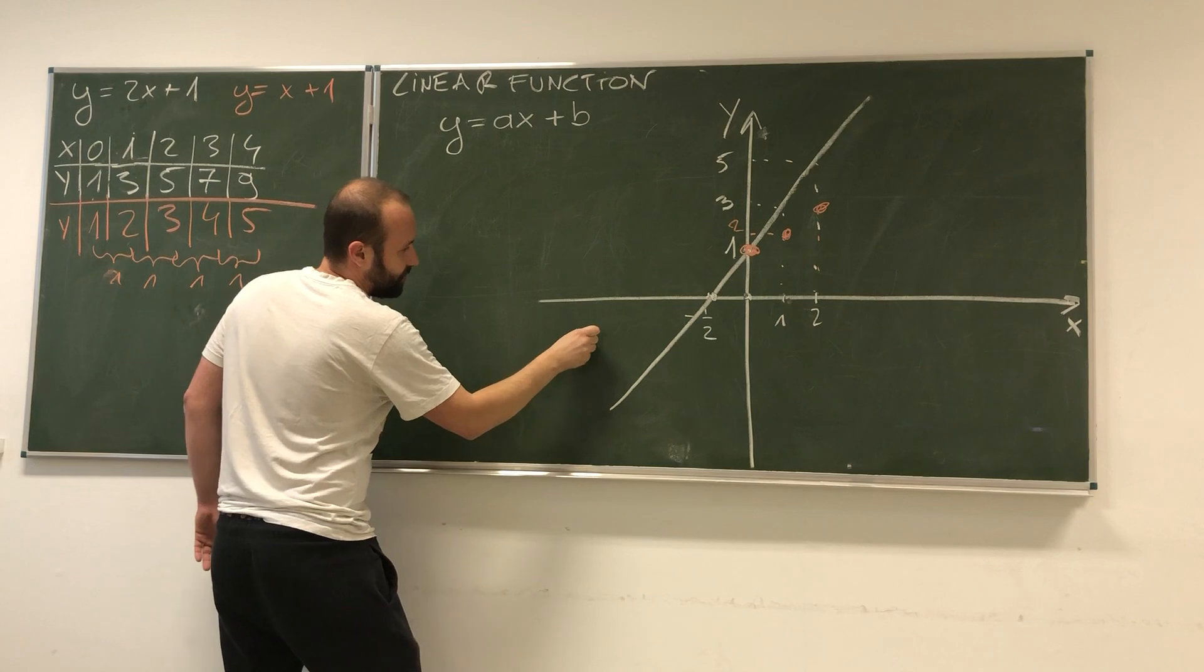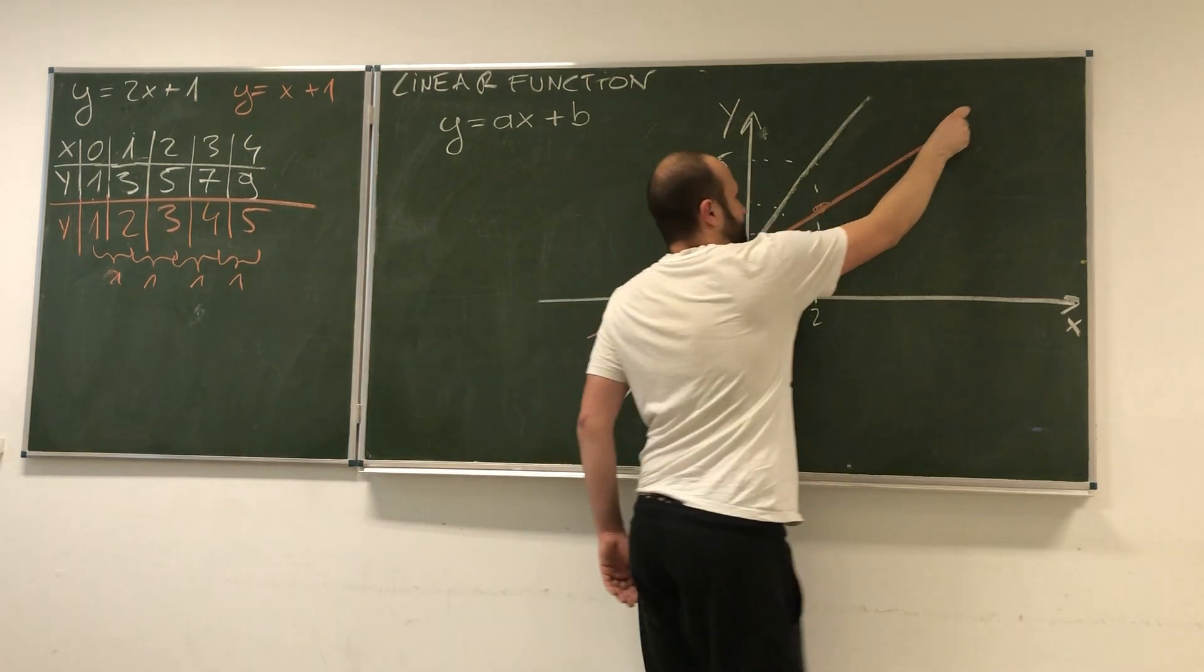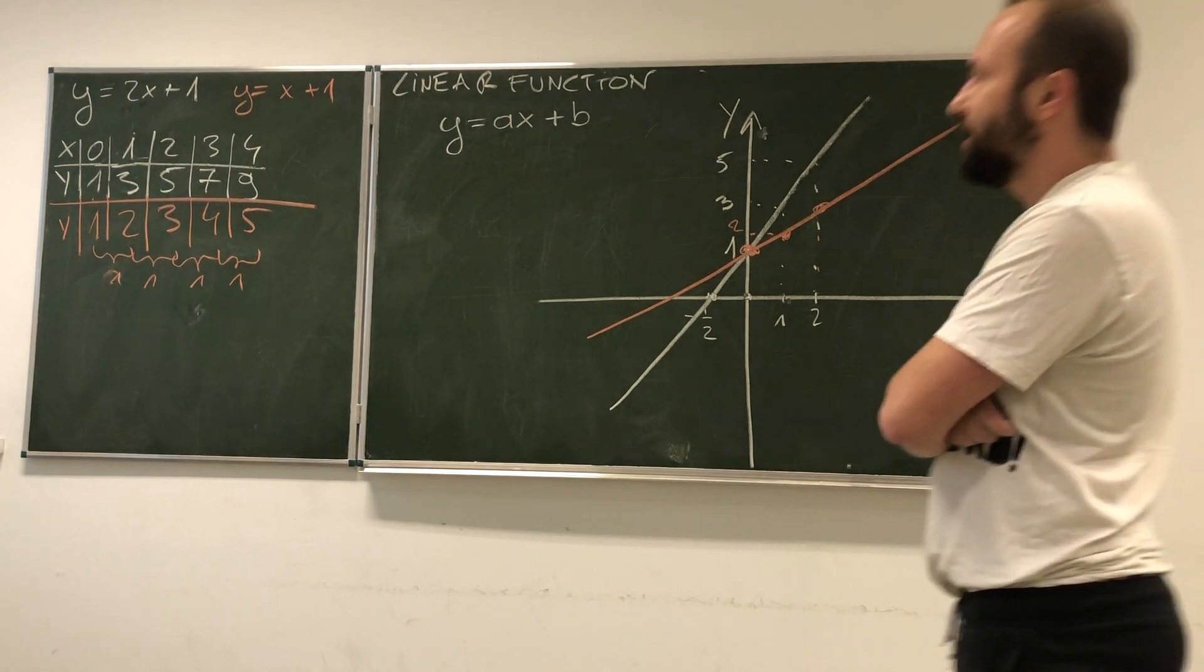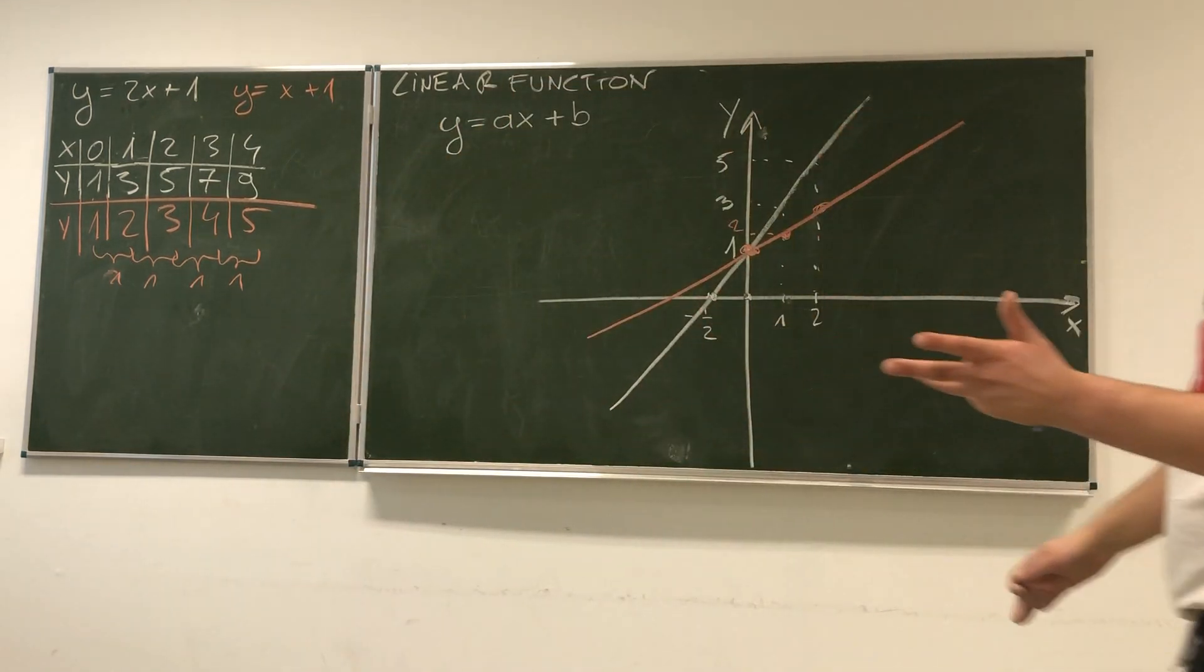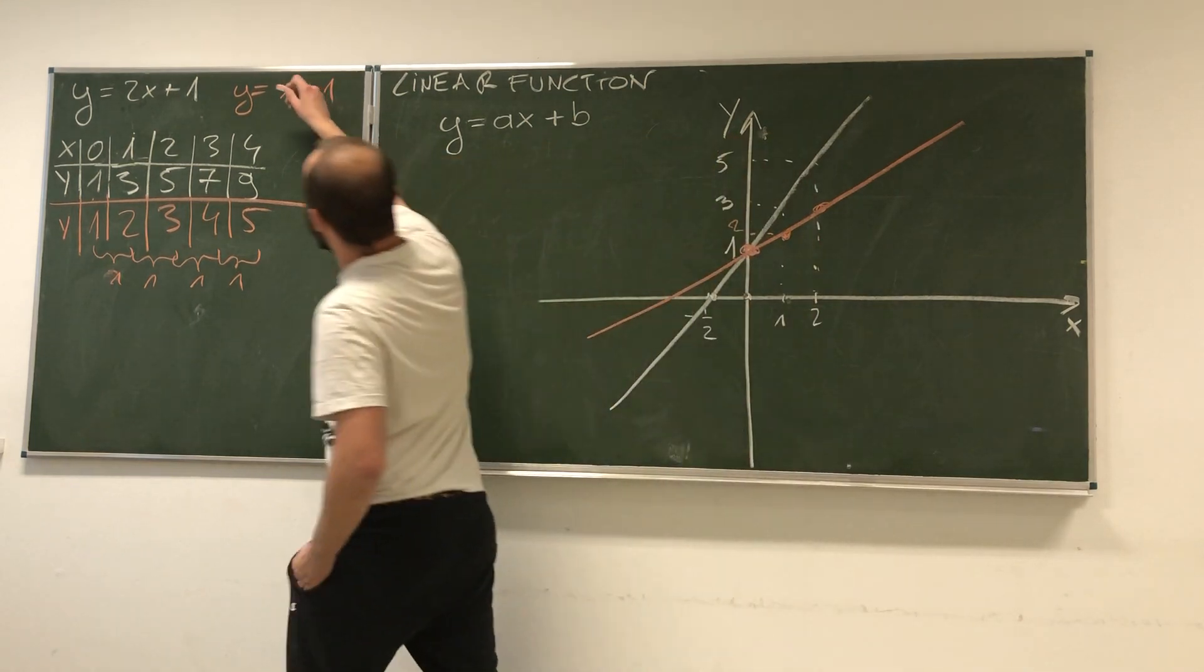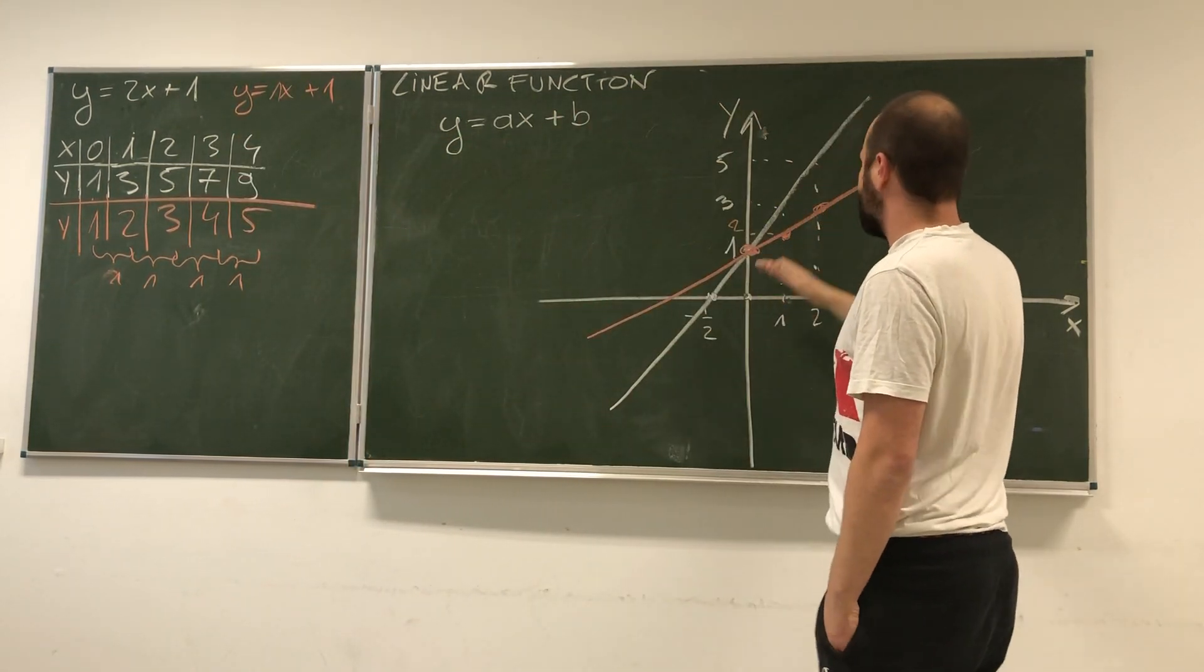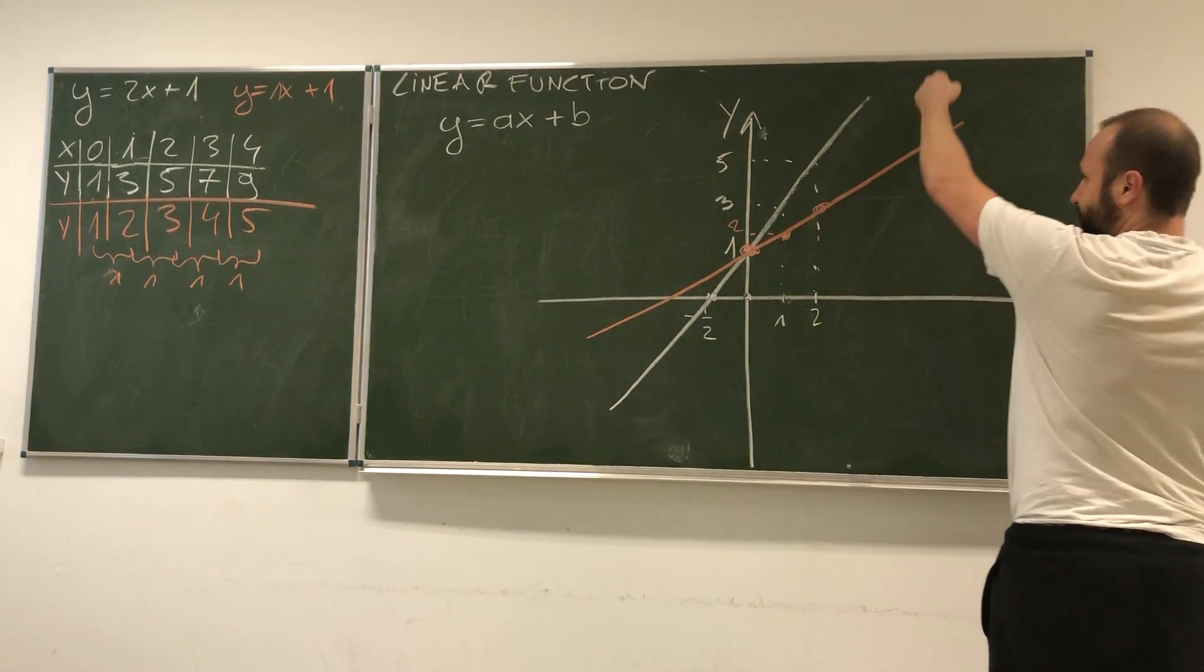If I draw this function, it's going to look like this. Why is this function looking different? We see that b, the constant, is the same in both cases. But here the coefficient is 1. This function is also rising—as x gets bigger, y gets bigger—but this function grows more slowly.